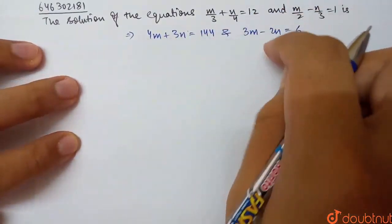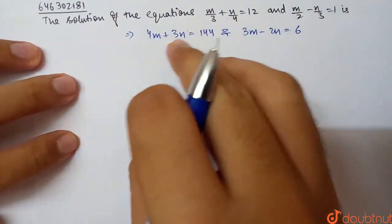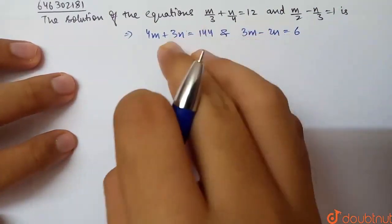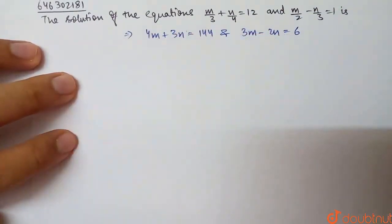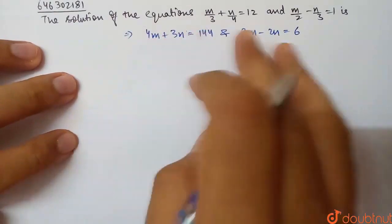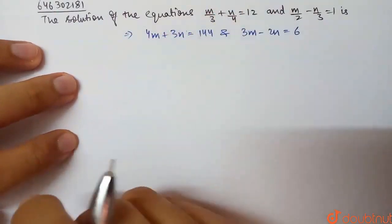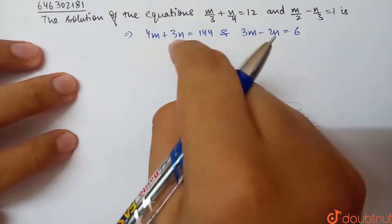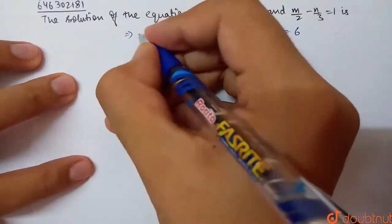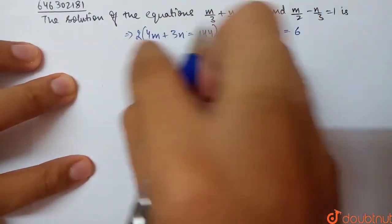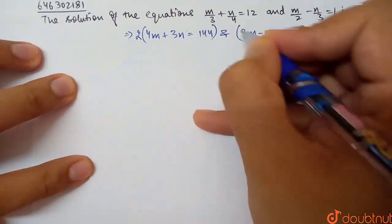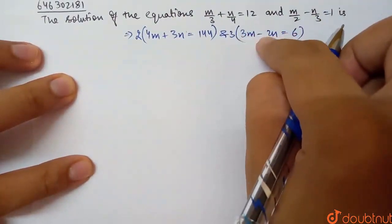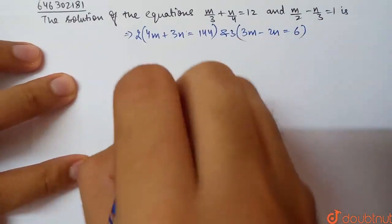Now for solving, I could substitute one variable into the other equation. Or, I can make the coefficients equal so that when we add the equations, a term will cancel out. I will multiply the first equation by 2 to get 6n, and multiply the second equation by 3 to also get 6n. When I add these two, the n terms will cancel.